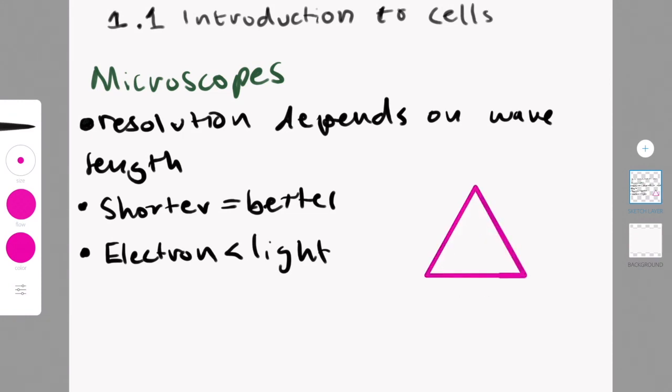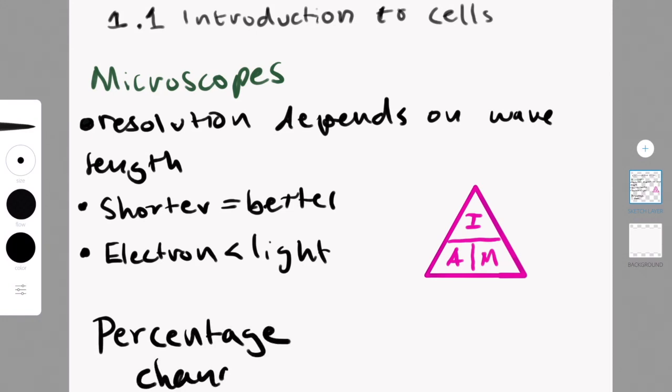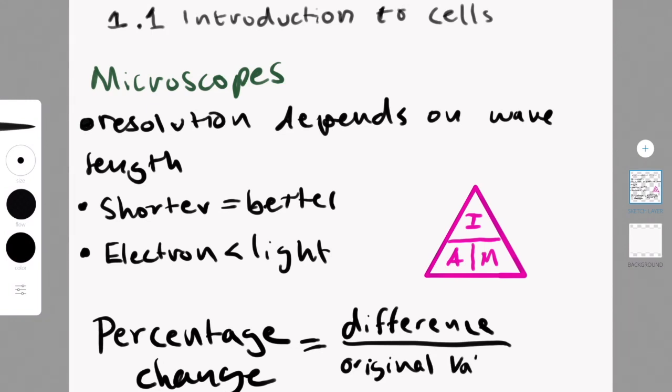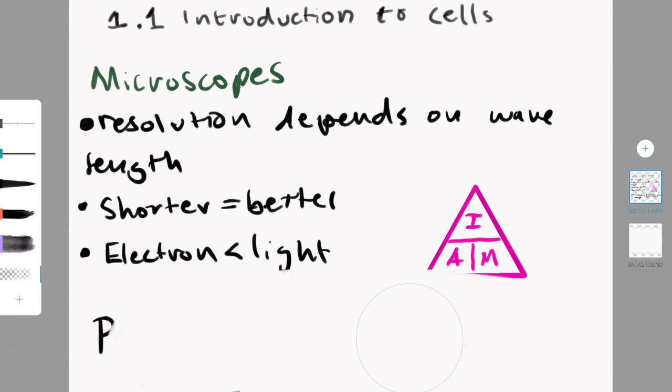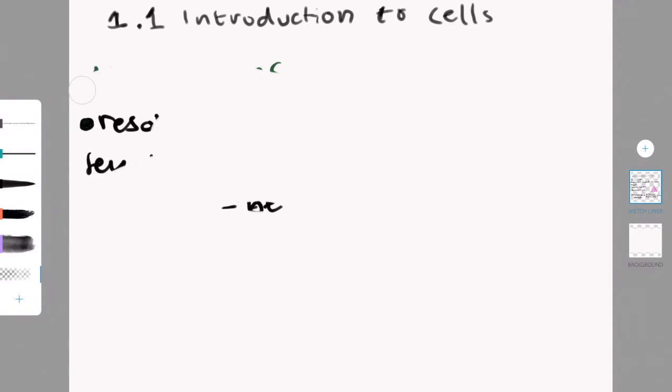You also need to know how to calculate magnification. How you calculate this is there's this formula. As you see, I drew this triangle where it says I AM. The I stands for size of image. The A stands for actual size. The M stands for magnification. So if you need to find the magnification, you do I divided by A. If you need to find the size of image, you do A times M. So like if it's above and below, then you divide, and if it's next to each other, you do times. Essentially, magnification equals size of image divided by actual size. And I will go through an example soon. Now, percentage change is also something you need to know. This is the difference between the two divided by original value times 100. And I will also do an example.